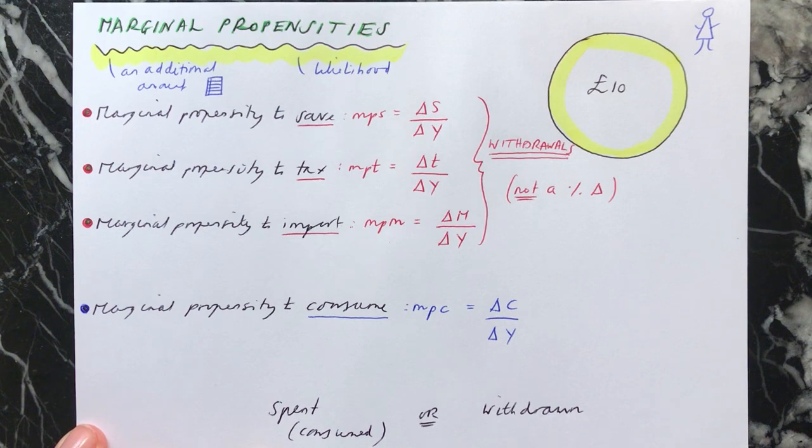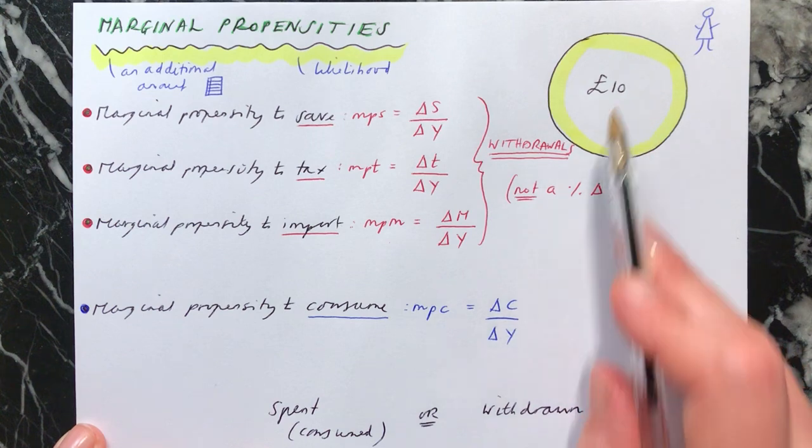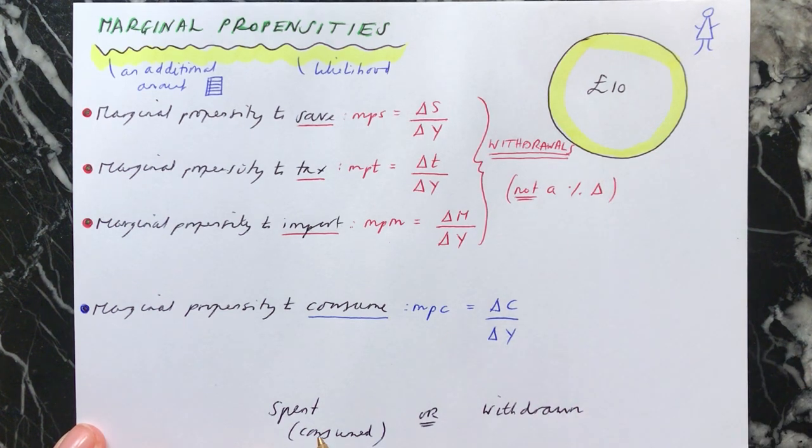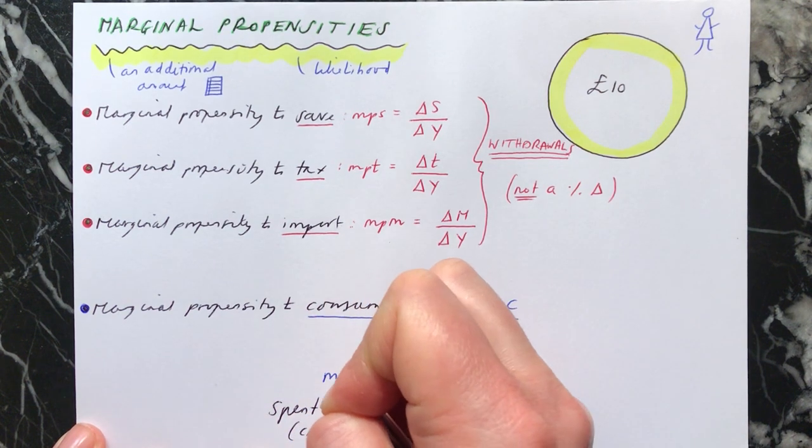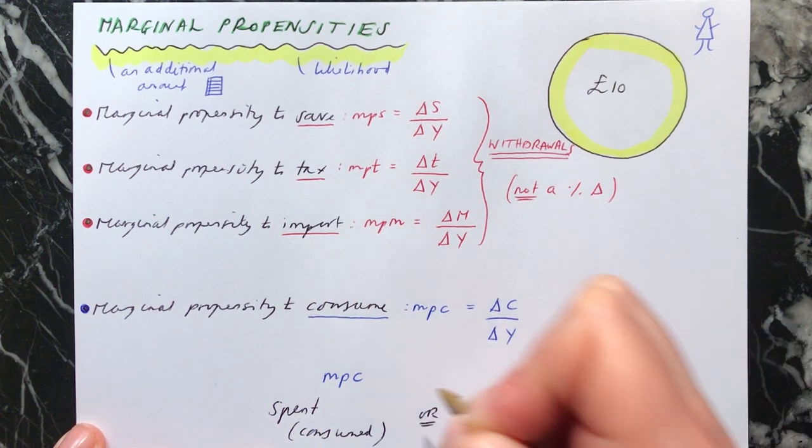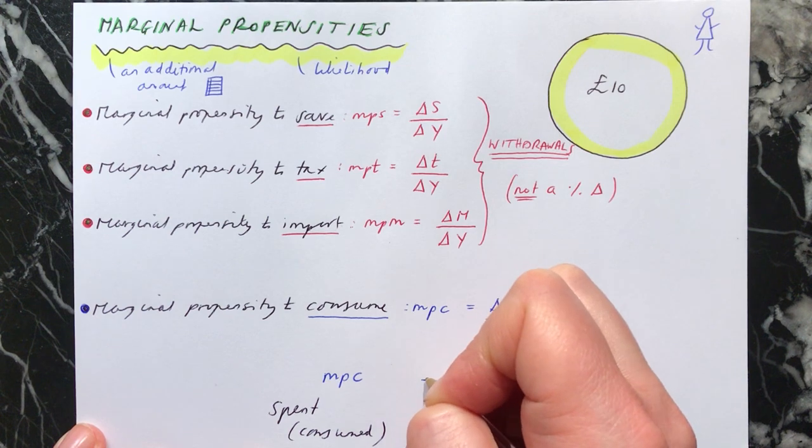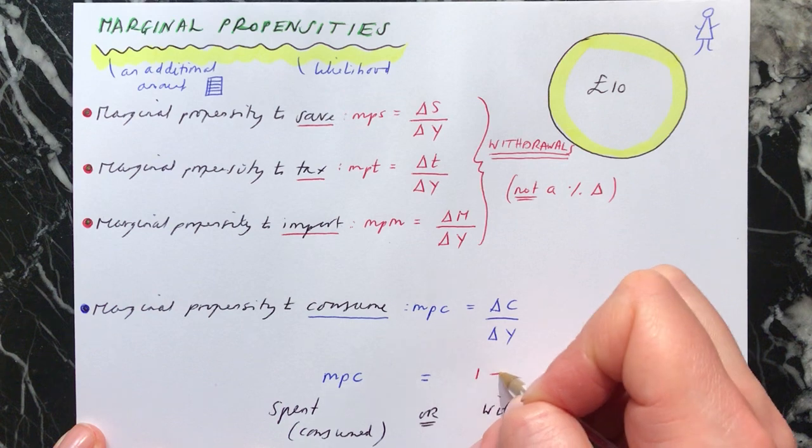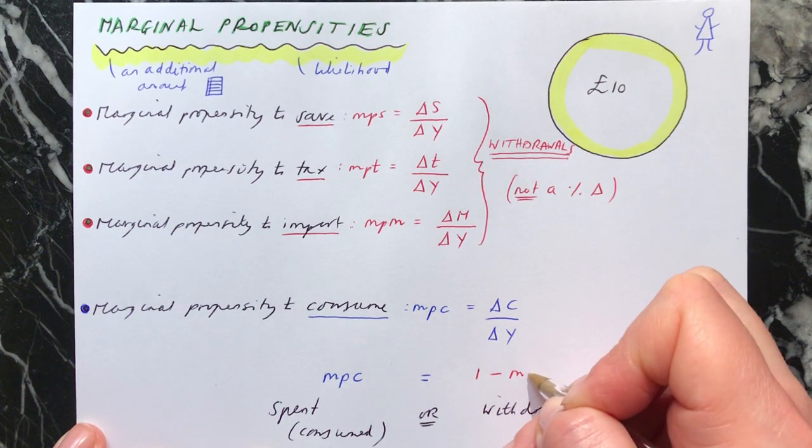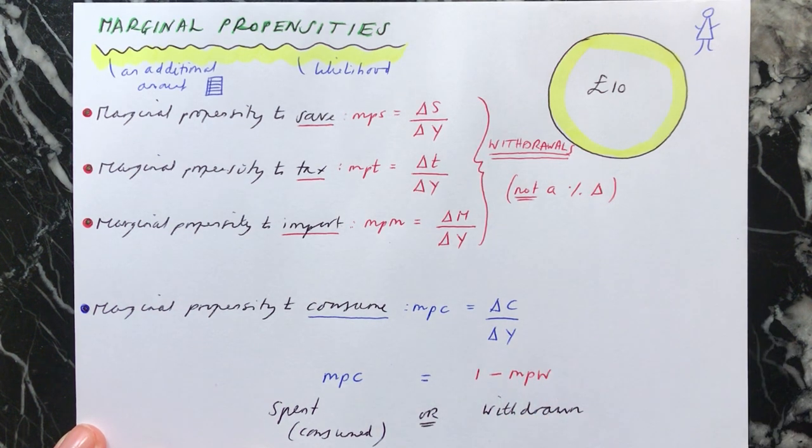And therefore, if you have any amount of money, for instance here, the £10, you know that the £10 can be divided between these two. And it's therefore true that your marginal propensity to consume must be equal to 1 take away the marginal propensity to withdraw.